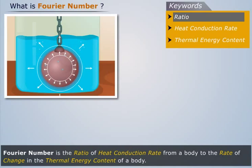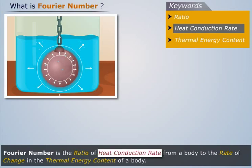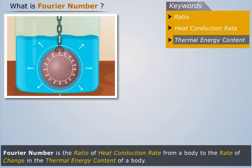Thus, Fourier number is the ratio of heat conduction rate from a body to the rate of change in the thermal energy content of a body.